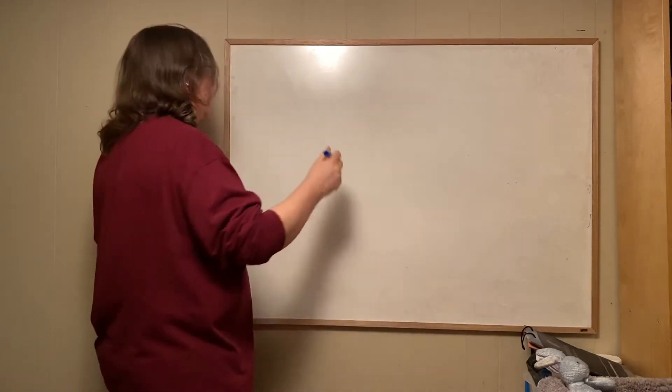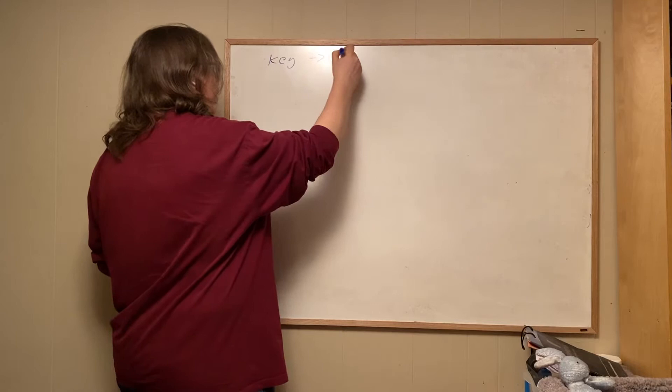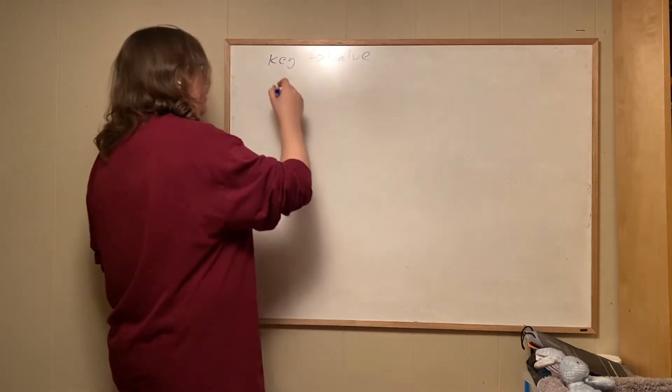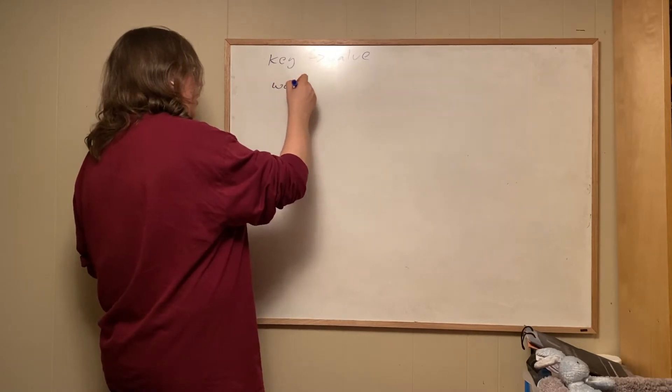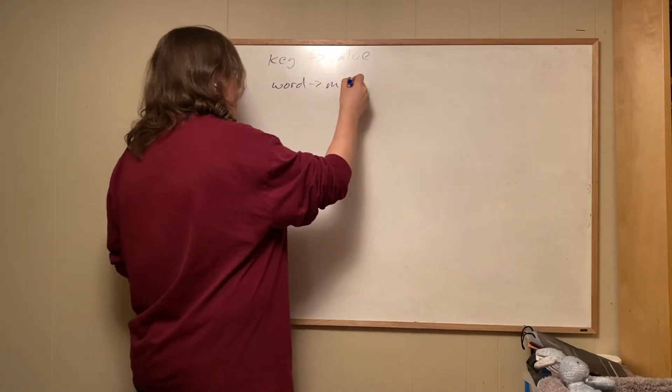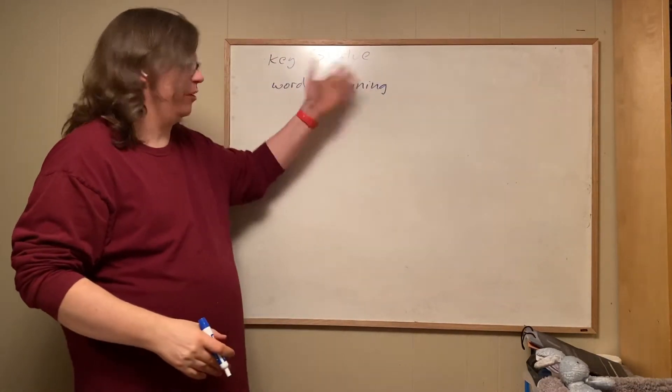So remember that a map is a key-value pair. And we also call it a dictionary, and a dictionary has a word and a meaning. But word and meaning, key and value, same thing.